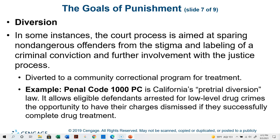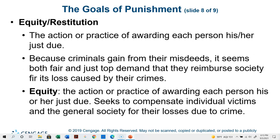Diversion: in some instances, the court process is aimed at sparing non-dangerous offenders from the stigma and labeling of a criminal conviction and further involvement with the justice process. They could be diverted to a community correctional program for treatment. For example, in California, Penal Code 1000 talks about pretrial diversion — it allows eligible defendants arrested for low-level drug crimes the opportunity to have their charges dismissed if they successfully complete drug treatment. In court you'll hear attorneys refer to PC-1000 as drug diversion.